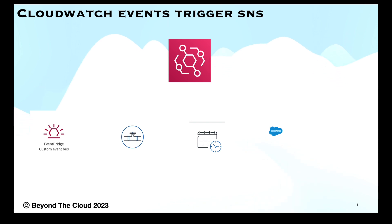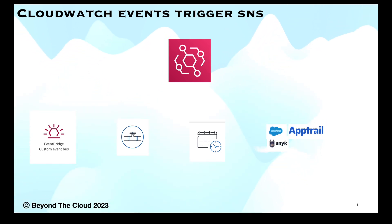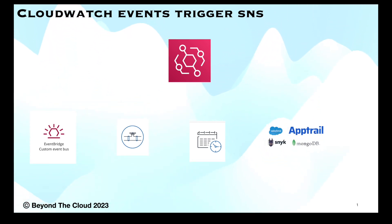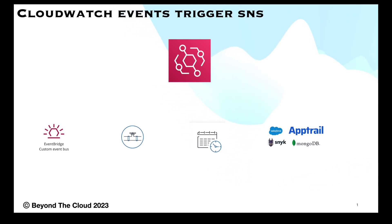AWS EventBridge has a wide range of integrations with third-party partners like Salesforce, Apptrail, Sync, MongoDB, and others. From these third-party sources, AWS EventBridge also receives events for further processing.